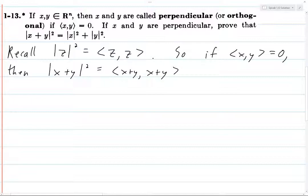And just to go through the details in a little more detail, we can use linearity first in the first entry. So this is the inner product of x with x plus y, plus the inner product of y with x plus y.